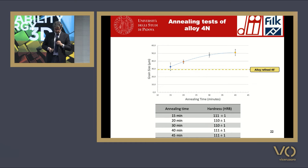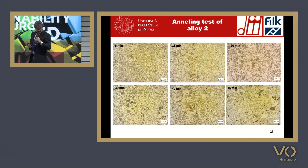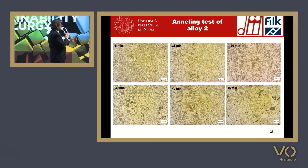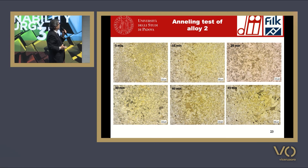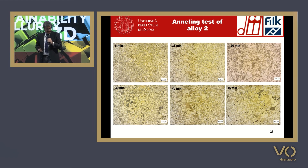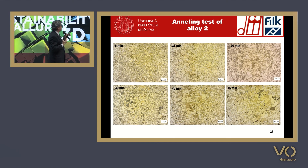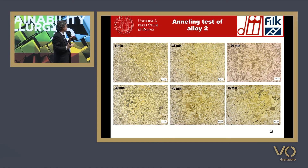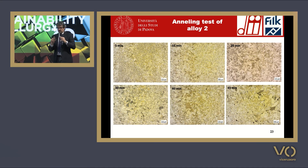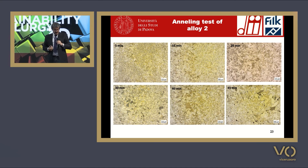This is the Vickers microhardness obtained after the different steps. You can see that at the end, after the welding process and final annealing, the hardness obtained is very low, and it is possible to obtain an alloy that is very tough. It is not hard, but it is tough.